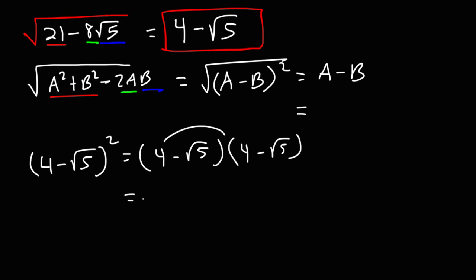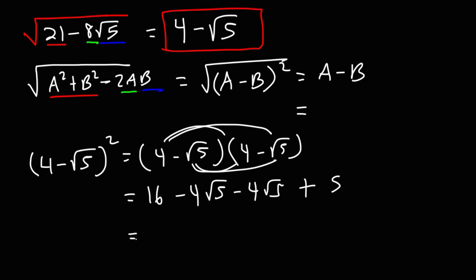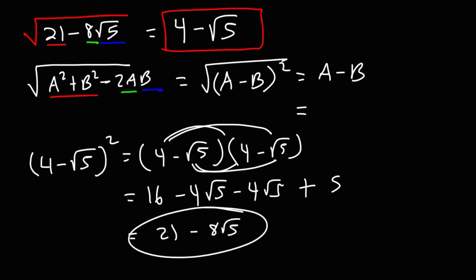4 times 4 is 16. Then we get negative 4 root 5 and another negative 4 root 5. Two negatives make it positive, and the square root of 5 times the square root of 5 is the square root of 25, which is 5. Combining the first and last terms: 16 plus 5 is 21. And negative 4 minus 4 gives negative 8. So we do get what's inside of the radical, which means this is indeed the correct answer.